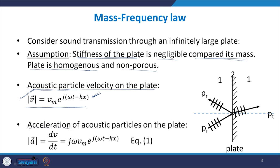The acceleration of the acoustic particles on the plate can be given as dV/dt. If you differentiate this expression, what you get is j·ω·V_m·e^(j(ωt − kx)). When you differentiate, only the time term contributes, giving j·ω as a constant multiplier. This becomes the expression for the acceleration of the acoustic particles on the plate.